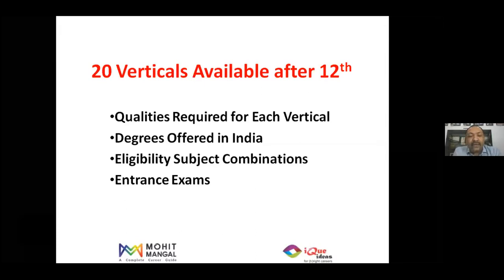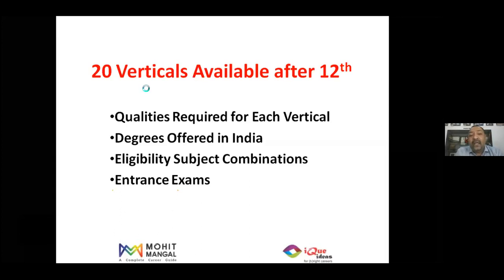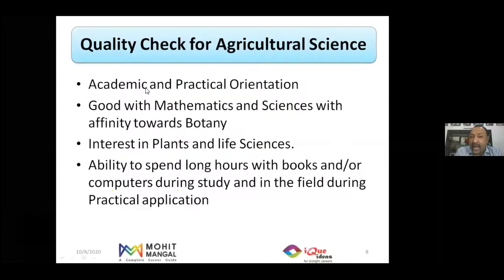The central point of today's interaction covers 20 verticals. I will discuss the qualities required, degrees available in India, eligibility criteria, entrance exams, and career prospects for each. These 20 verticals are sequenced in alphabetical order — no vertical is better or worse than another.